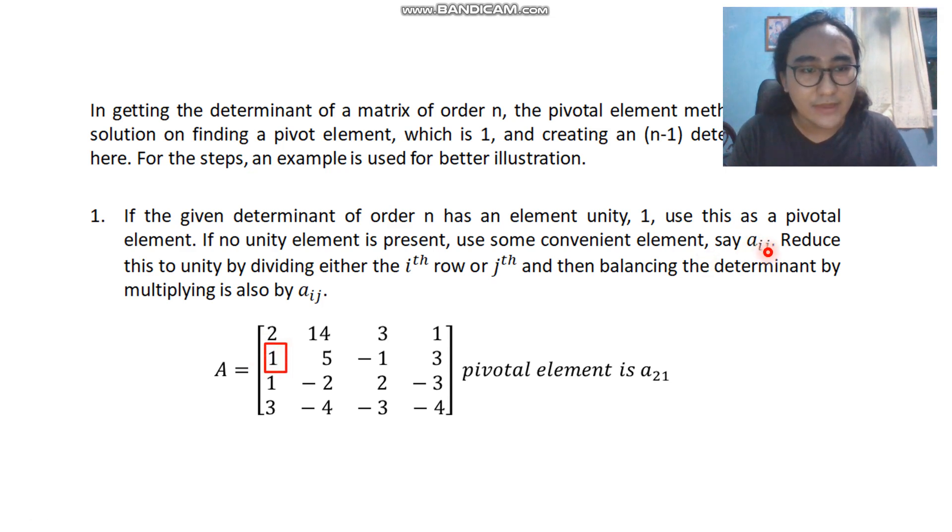So element i, j stands for the row number and j stands for the column number. So our pivotal element is a sub 2, 1, row 2, column 1.